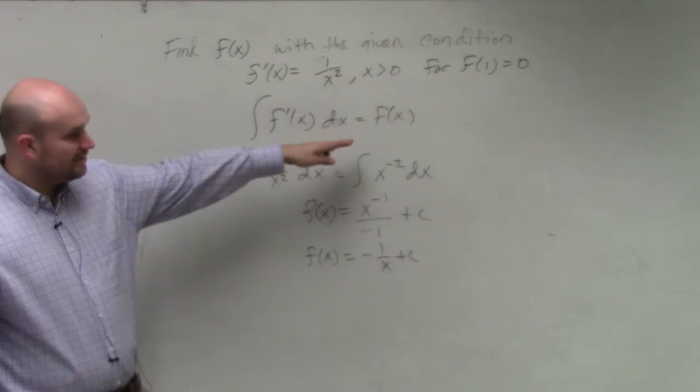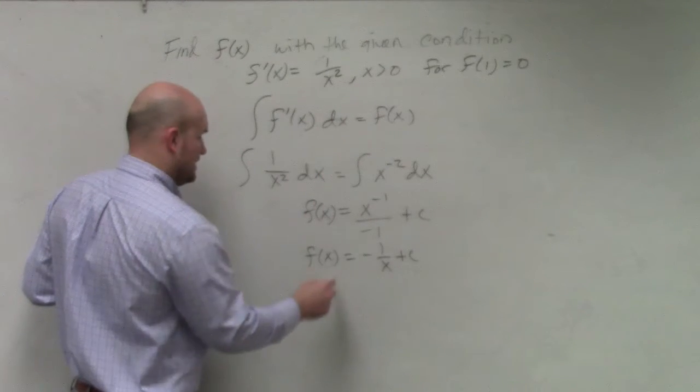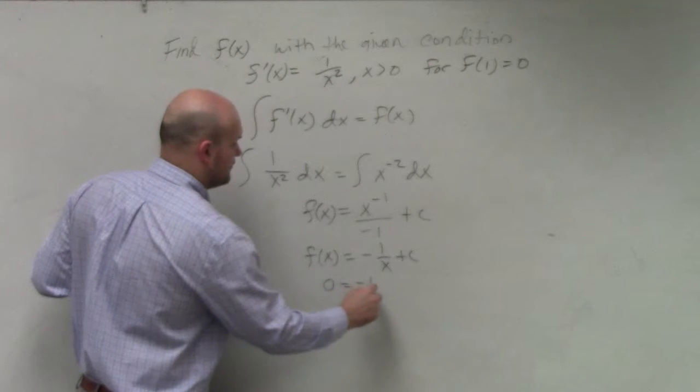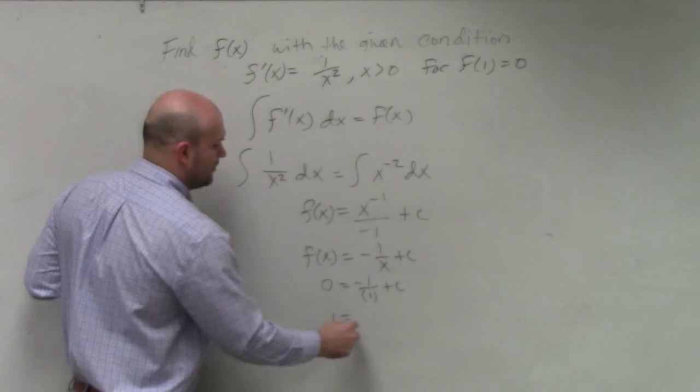Now all we need to basically do is enter in our information here. So I can rewrite f of 1 as 0 equals negative 1 over 1 plus c. That becomes 1, add it to the other side, 1 equals c.